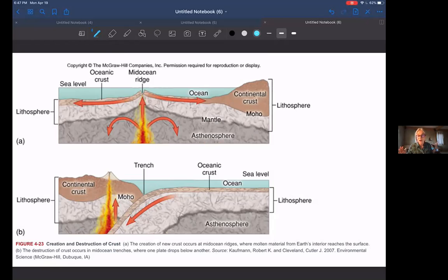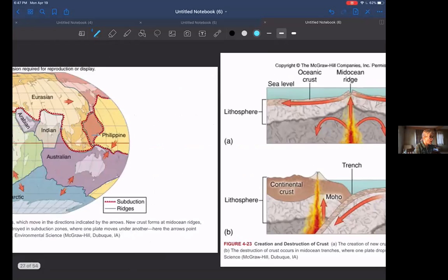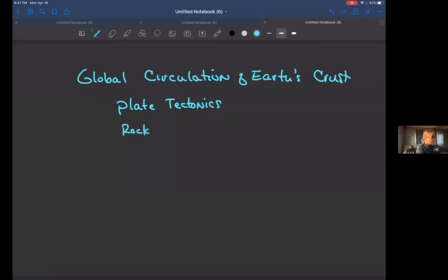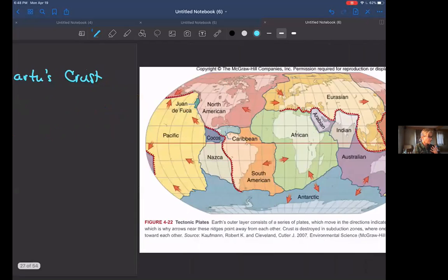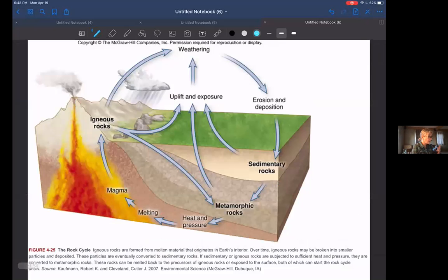We can also talk about the rock cycle, so we can talk about the formation of rocks and then their breaking down. This might be important in terms of materials that are being generated. For example, phosphorus and the rock cycle is important in that. Here we have magma rising up, forming igneous rocks, and then that can be exposed.